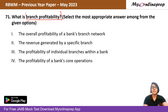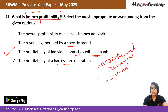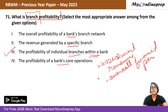Question 71: What is branch profitability? Options: (A) overall profitability of the bank branch network; (B) revenue generated by a specific branch; (C) profitability of individual branches within a bank; (D) profitability of the bank's core operations. Branch profitability involves assessing the revenue and overall financial performance of each individual branch to determine its contribution to the bank's profitability. The right answer is option C — the profitability of individual branches within a bank.